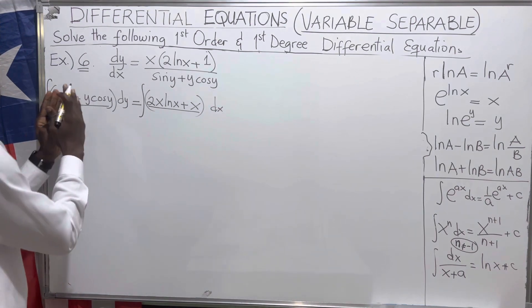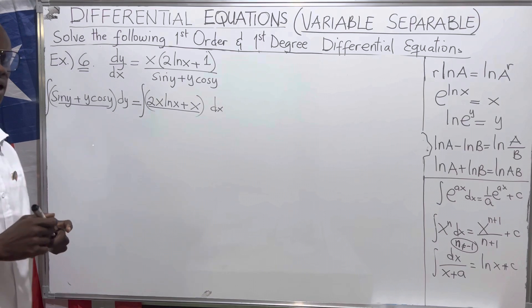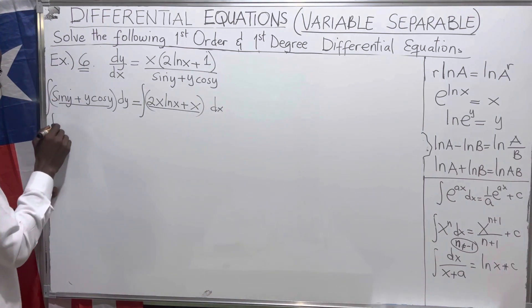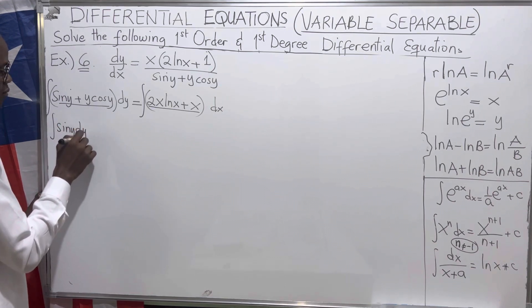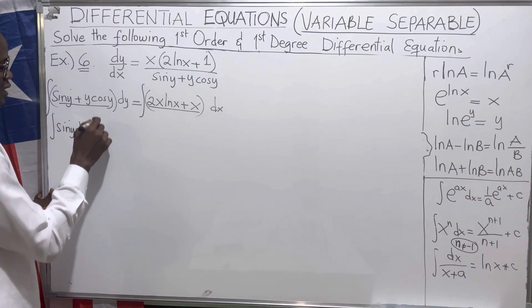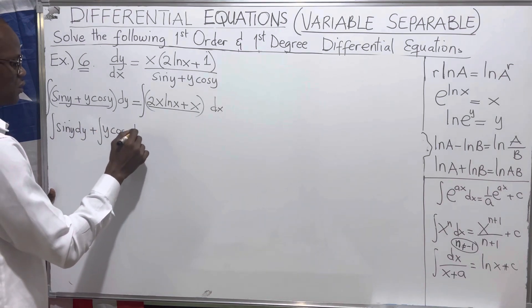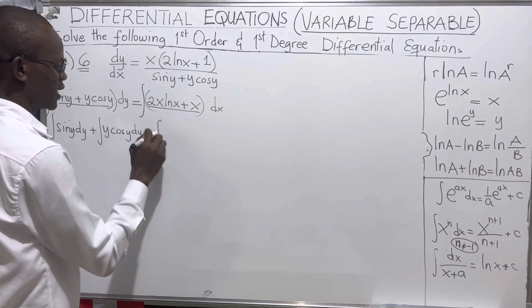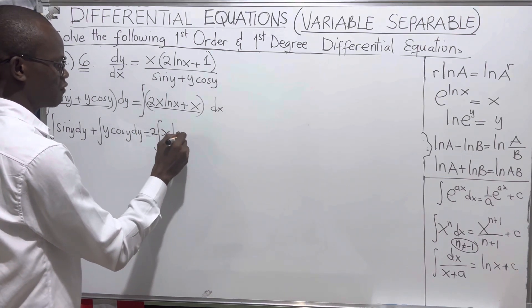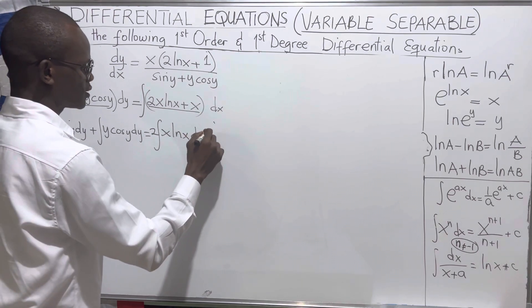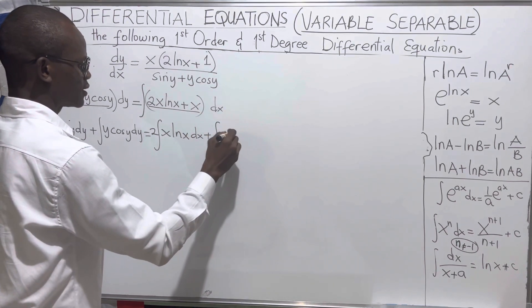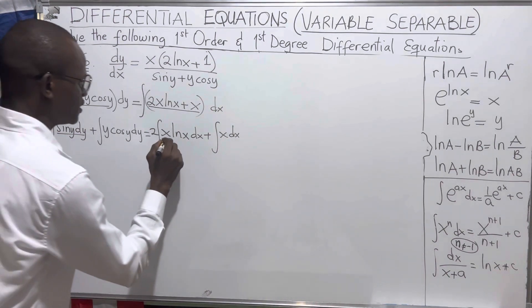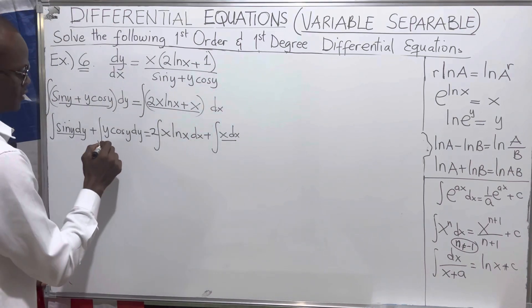The second step, when you have separated the variables, is to integrate both sides to get the general solution. So we take the integral of each term: the integral of sin(y) dy, plus the integral of y·cos(y) dy equals 2 times the integral of ln(x) dx plus the integral of x dx.